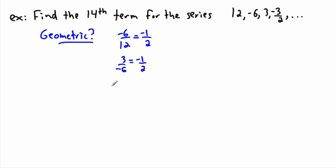Let's try the third one here. Negative 3 halves divided by 3. A fraction divided by a regular number is the same as negative 3 over 2 divided by 2 times 3. That's negative 3 over 6, which is the same as negative 1 half. So I know it is geometric.